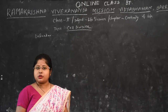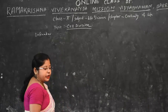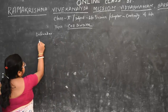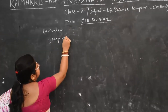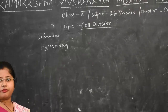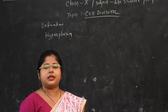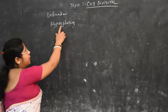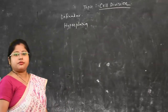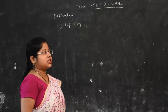The increase in the number of cells by the process of Cell Division is known as Hyperplasia. Cell Division is categorized under three different types.